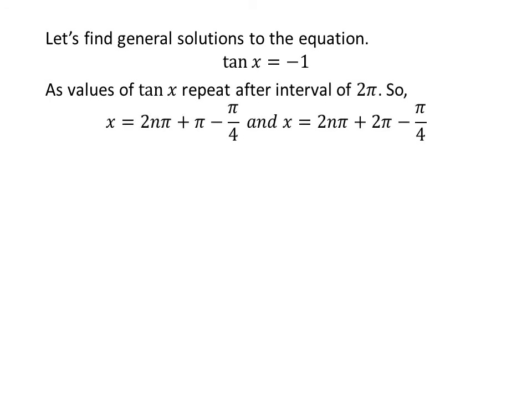Let us find the general solutions. Since the values of tangent of x repeat after the interval of 2 times pi, the general solutions are 2 times n times pi plus pi minus pi upon 4, and 2 times n times pi plus 2 times pi minus pi upon 4, where n is an integer.